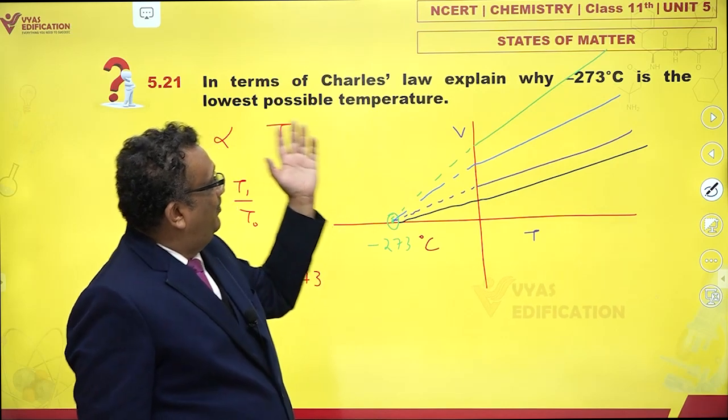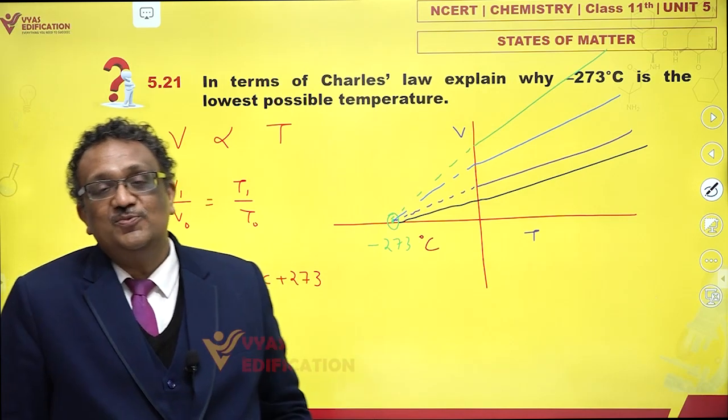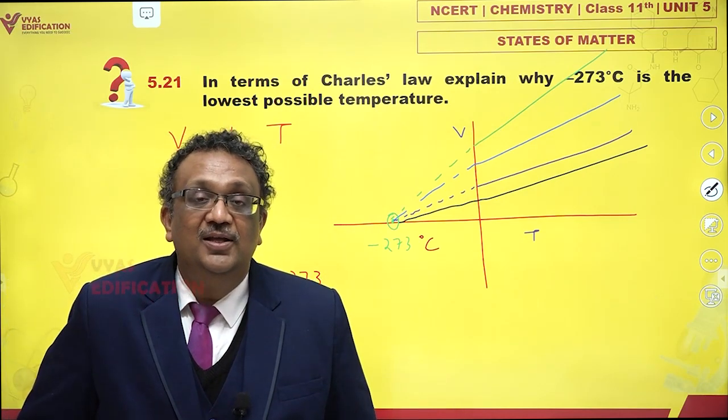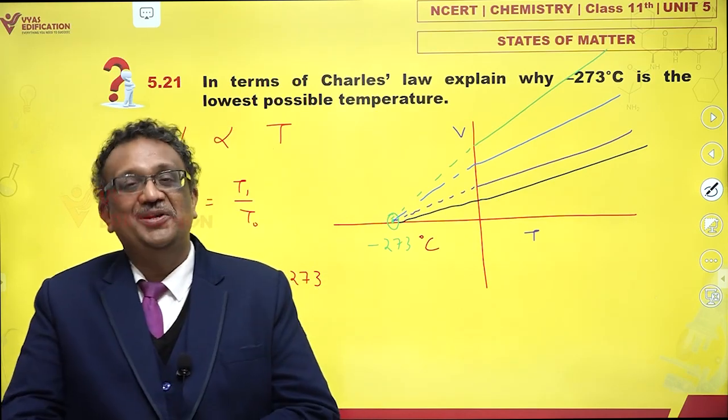So by Charles law, you can say that minus 273 degrees Celsius is the lowest possible temperature. Since below this temperature, if that is possible, the volume would become negative, which is impossible. So that is the lowest possible temperature.